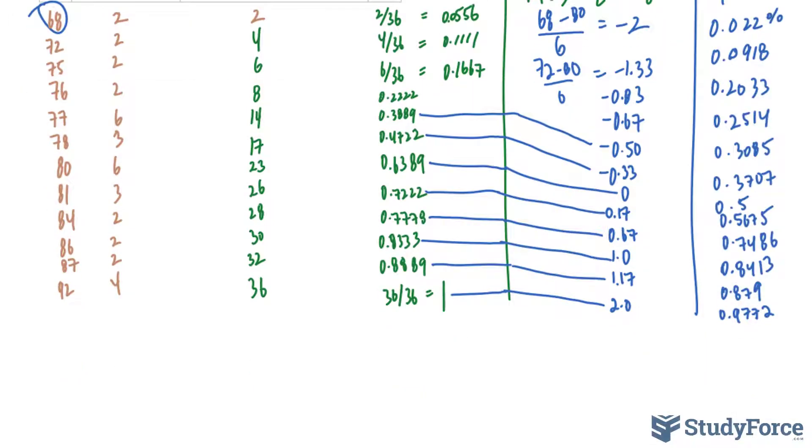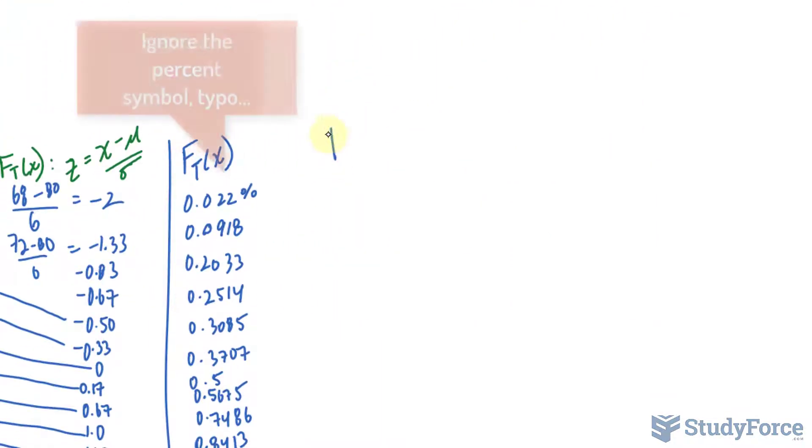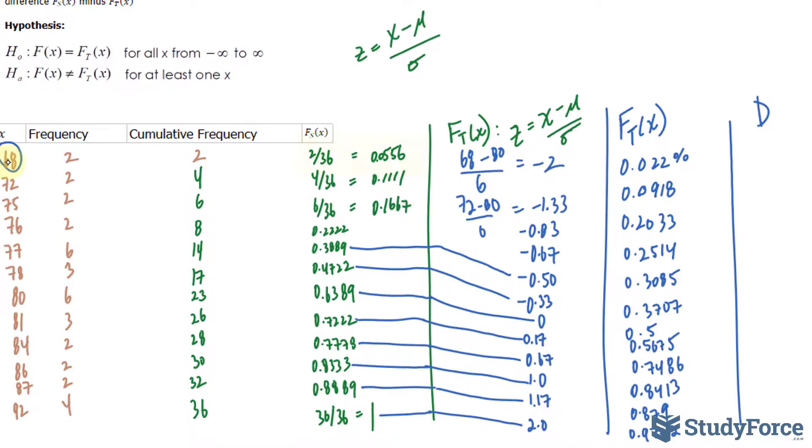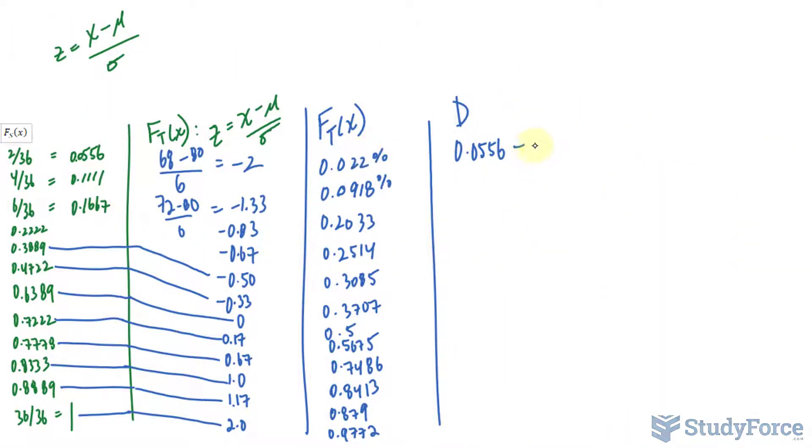Now that we found these values, the last thing we have to do is calculate D. Remember that formula I showed you earlier. What we will do is subtract the values of F_s with those of F_t. For example, the value for 68 happened to be 0.0556 minus this value, 0.022. And we take the absolute of these.